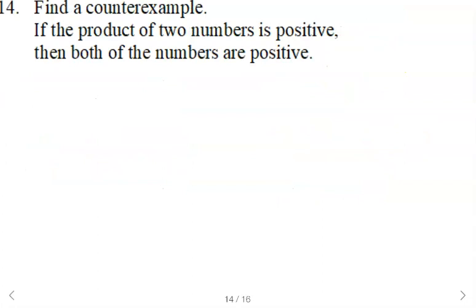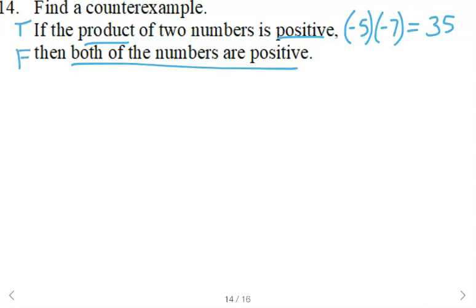Find a counterexample. If the product of two numbers is positive, then both of the numbers are positive. Well, what happens when we do a negative times a negative? So like negative 5 times negative 7. That would give us 35. That means the product is positive. So that part's good. That's true for the hypothesis. But are both of the numbers positive? No, they were both negative. So this is a good counterexample. Any two negative numbers you multiply together will give you a positive number, but both of the numbers are not positive.